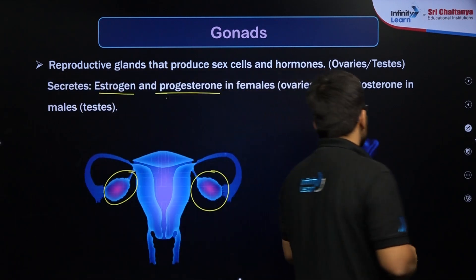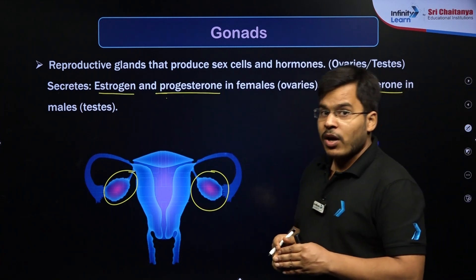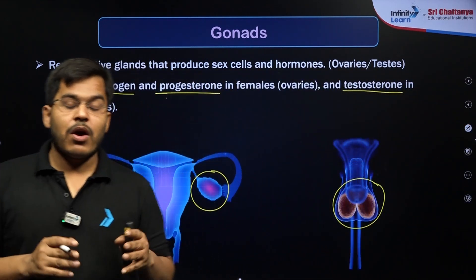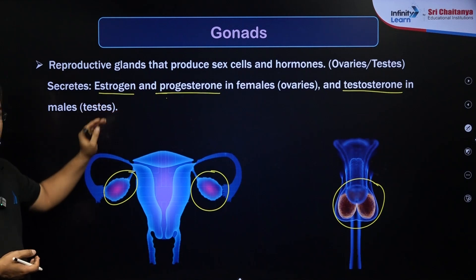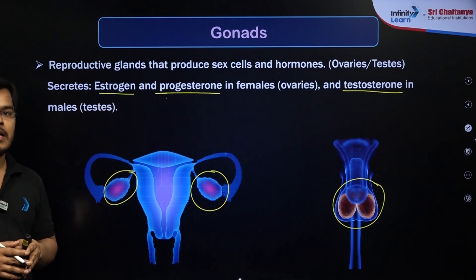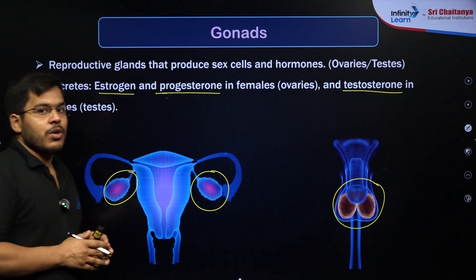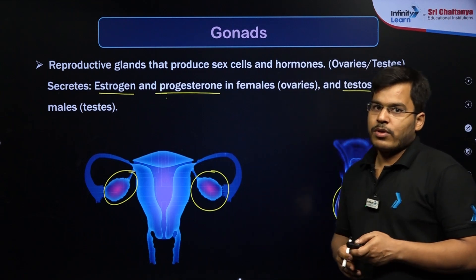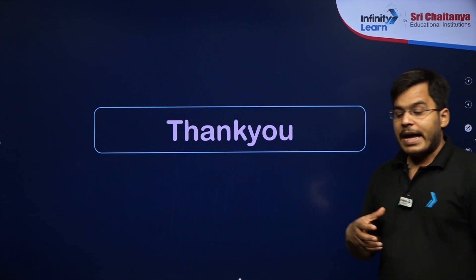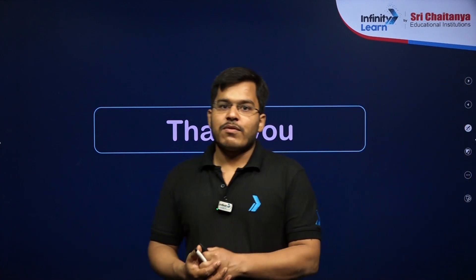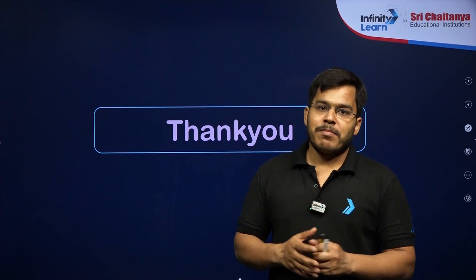In males, the testes release testosterone, which gives secondary sexual characteristics to males and helps in the overall development and proper functioning of the male reproductive system — similar to how estrogen helps in the proper functioning of the female reproductive system. These are the important hormones released by the gonads, or primary sex organs. That concludes our overview of endocrine glands and their hormones. See you in the next session — take care, keep studying, keep growing!